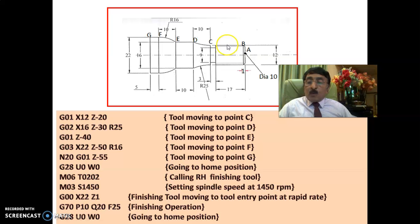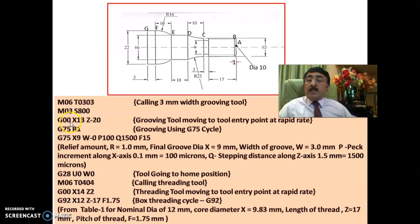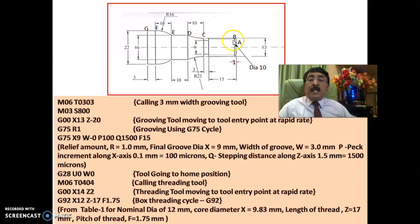Once finishing is done, the tool goes to the home position. Now the grooving tool — tool 3 — has a speed of 800 RPM. It comes rapidly: G00, X13, Z20, meaning it is 17 plus 20 and sits 1 mm away at X12. Then it moves to X9, which is the final diameter required.